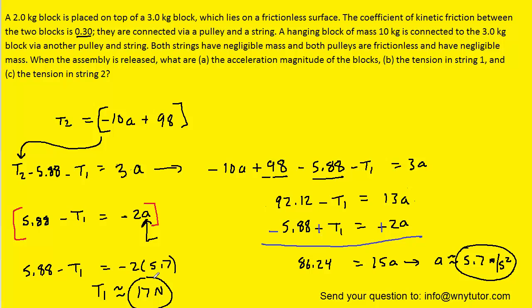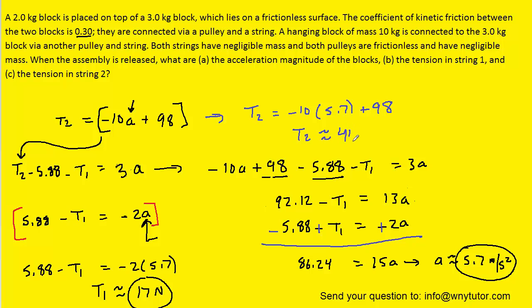To find T2, we come back to the earlier equation and plug in our acceleration. When we solve this equation for T2, we get approximately 41 newtons. That would be the correct answer to part C.